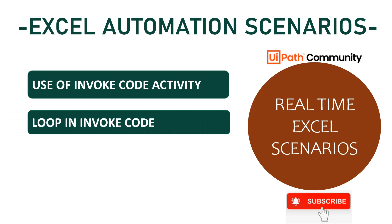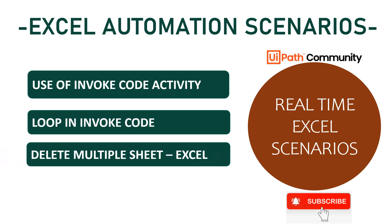In this video we are going to see how we can apply a loop inside the Invoke Code. In the previous video we saw how to delete a single sheet in Excel using the Invoke Code activity. In this video we will apply a For Each loop to delete multiple sheets by providing a list of sheet names to the Invoke Code.